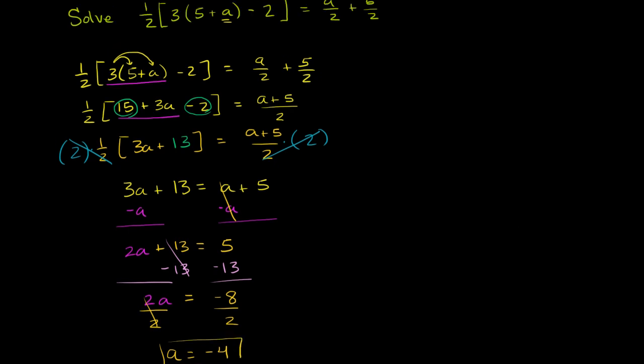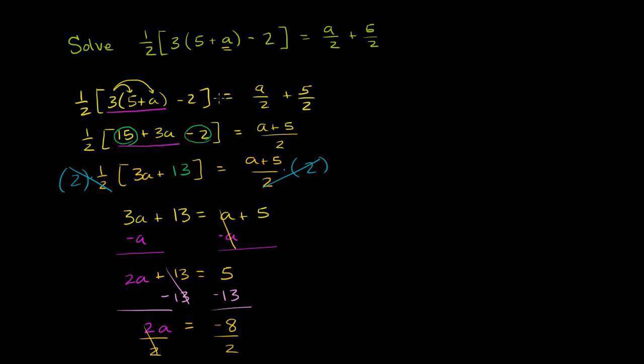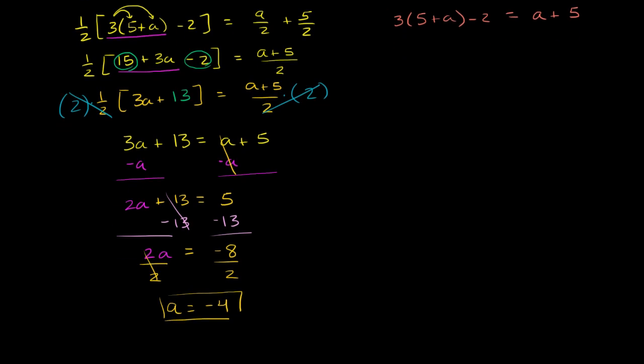We could have simplified it earlier on with that multiplying both sides by 2. There's actually many ways to do this problem. Just to show you how it could have simplified it faster, if I multiplied the left hand side and then the right hand side by 2 early on, remember the 2 has to be times both of these terms. On the left hand side, this would have just canceled out. 2 times 1 half is 1. So the left hand side would have simplified to 3 times 5 plus a minus 2. And then the right hand side, you would have distributed this 2. 2 times a over 2 is a, 2 times 5 over 2 is 5. You would have gotten the same answer, a is equal to negative 4.